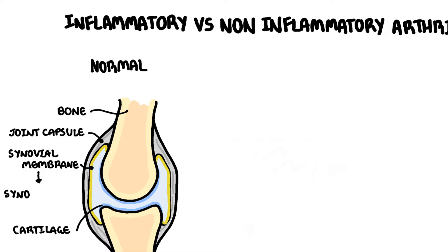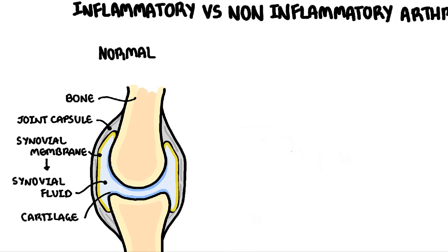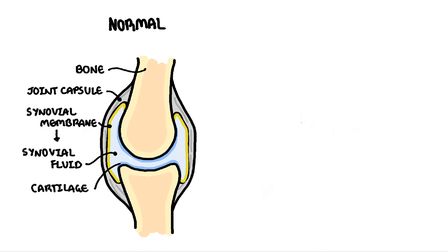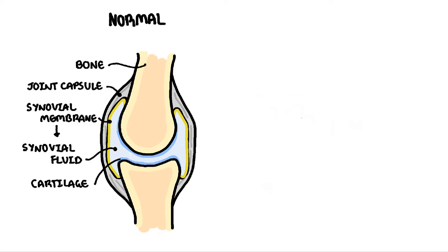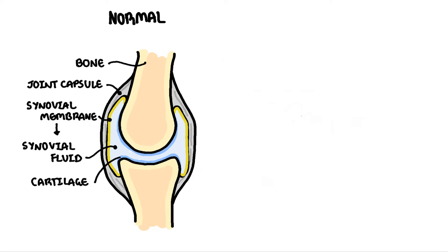The synovial membrane is important because it produces synovial fluid. The synovial fluid, located within the joint cavity, has three primary functions: lubrication, distributing nutrients, and acting as a shock absorber. Cartilage also minimizes friction on joint movement and acts as a shock absorber.